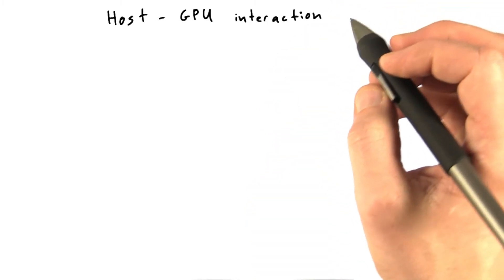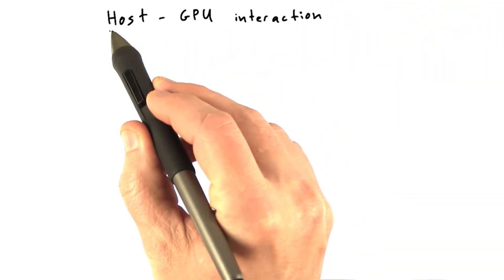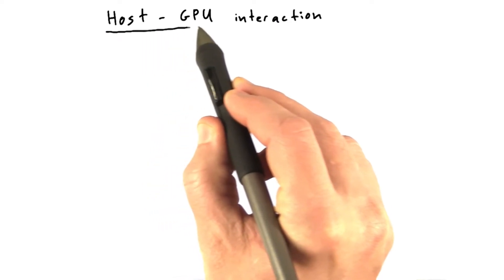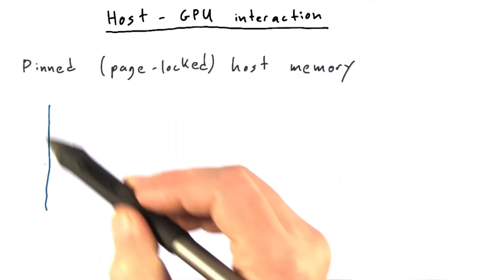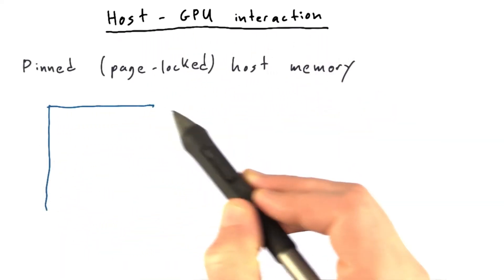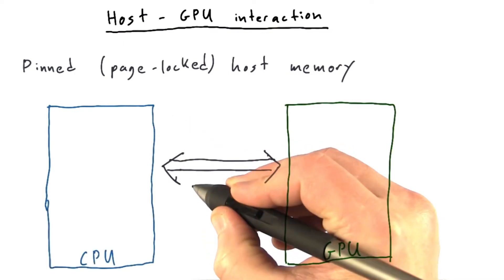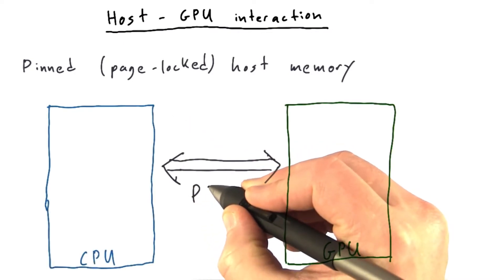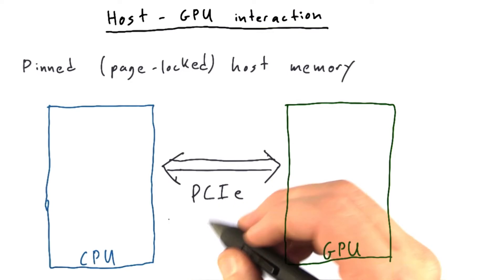Finally, let's talk about optimizations at the whole system level, including the interactions that happen between the host and the GPU. On most systems, the CPU and GPU are on different chips and they communicate through a PCI Express bus, or PCIe for short.